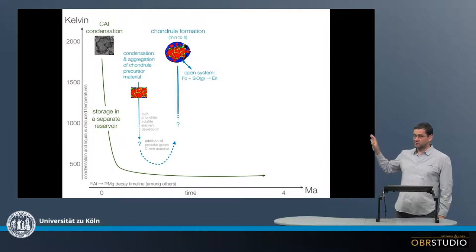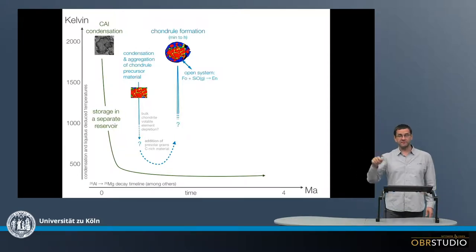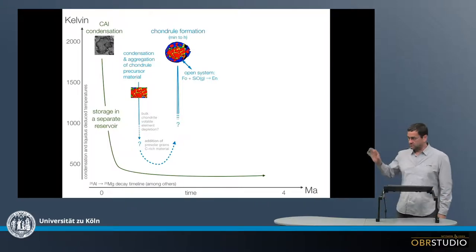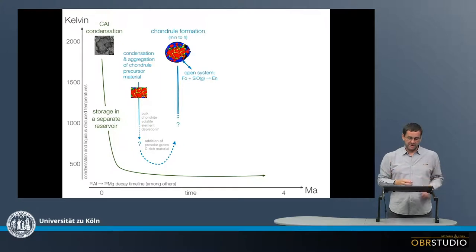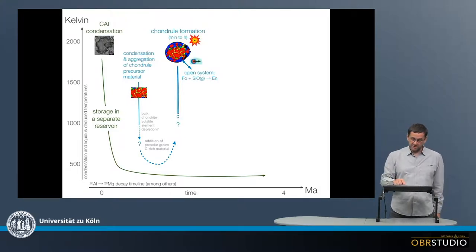And this is observed in many chondrules. This is the dominant chondral type with this porphyritic chondrule with this zonation. So therefore, it's likely we have evidence for this open system, and there's much more evidence for open system from also isotopes and so on. So this was a very short process, chondral formation exchange with the surrounding gas.